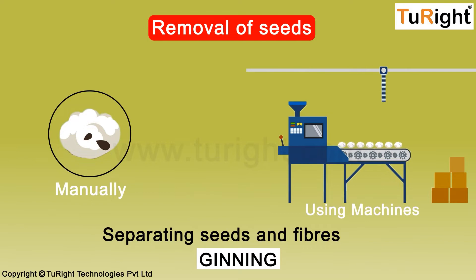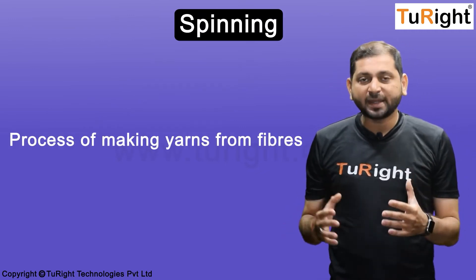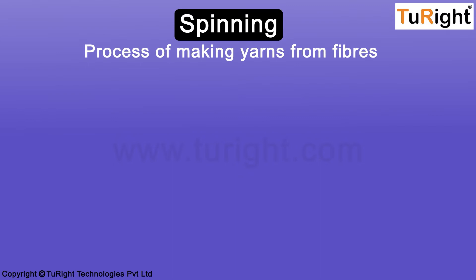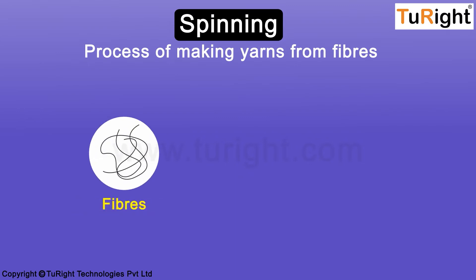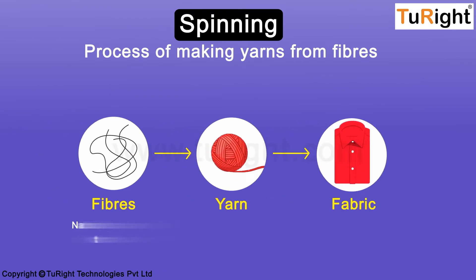Once ginning is successfully carried out, the fibers are taken for the next step — spinning. What do we mean by spinning? It's the process of separating yarns from fibers. Remember the series: fibers make up yarn, and yarn makes the fabric. Fibers are the naturally occurring threads that need to be drawn into long and continuous filaments. These long filaments are the yarns, and these yarns are woven into fabrics.